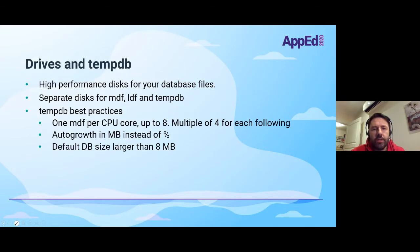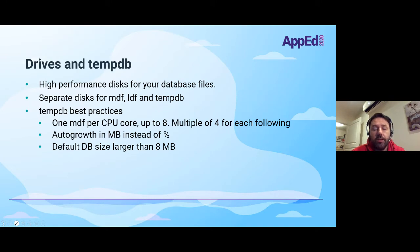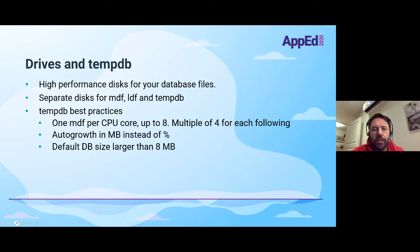Moving to drives: the TempDB often gets overlooked. You want high-performance disks for your database files and you should separate the MDF, LDF, and TempDB — the master database, log database, and TempDB — on different drives optimally. For TempDB, the best practice is one TempDB file per CPU core available, up to eight cores, and after that multiply by four for each additional core.